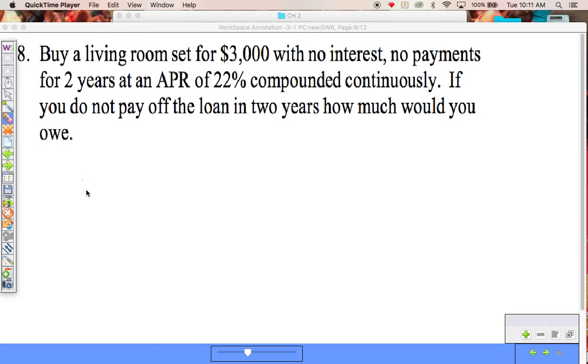Everybody's heard about these different places that will give you no interest, no payments for a certain number of years. These are great deals as long as you pay off the loan before it's due. For this one, if I can pay it off before my two years comes up, whatever that living room set costs, which is $3,000, is all I have to pay. If you wait two years and one day, you're going to owe them a lot of money.